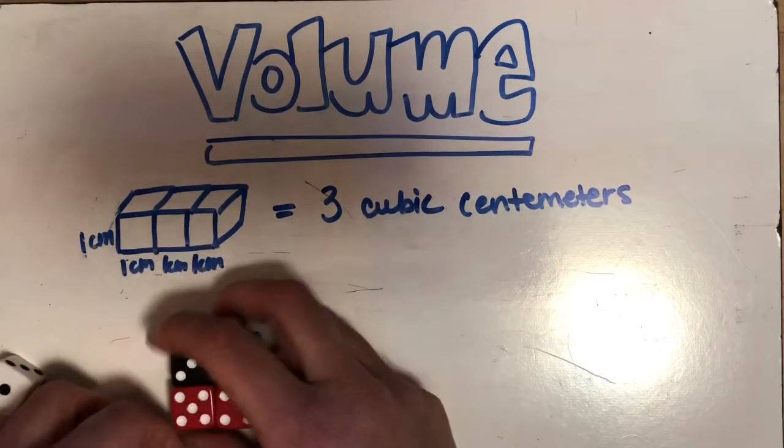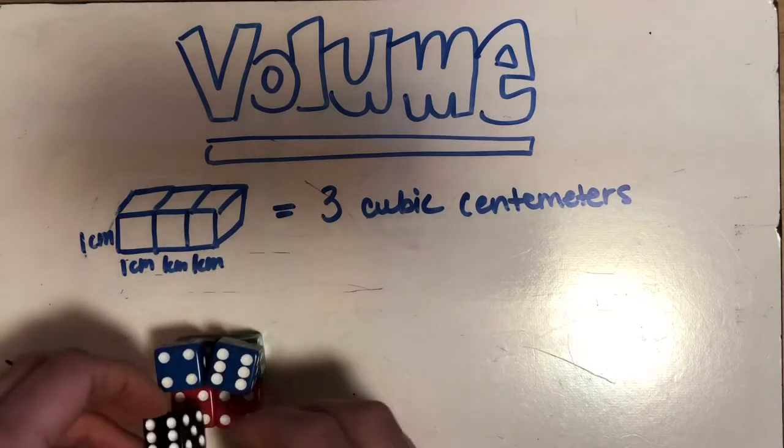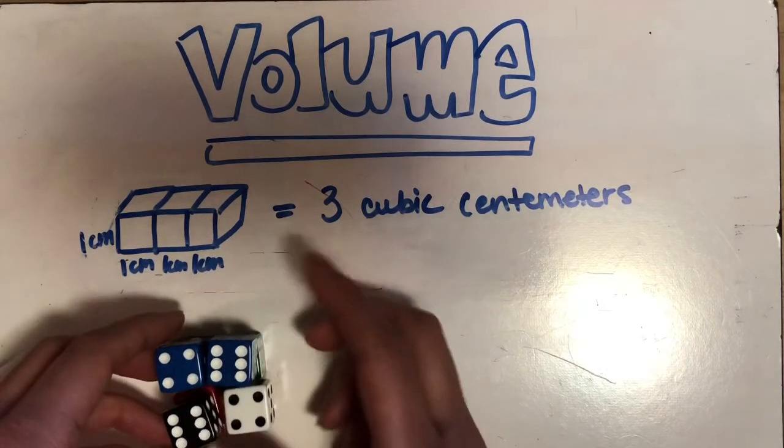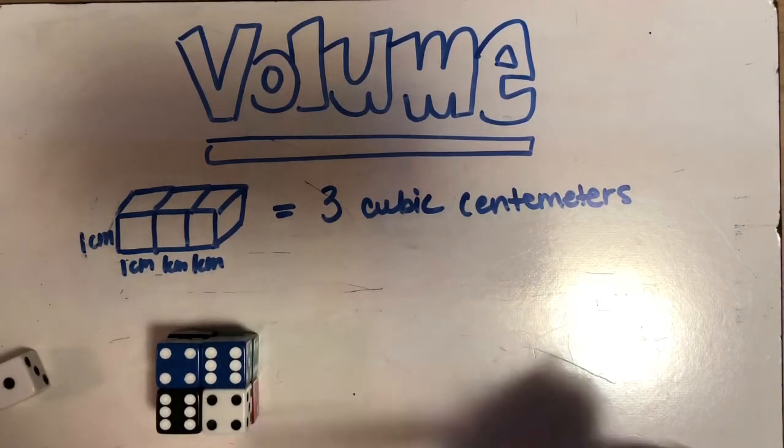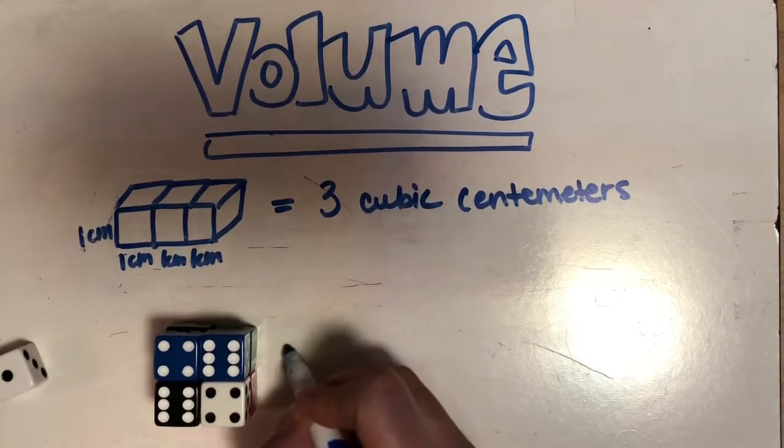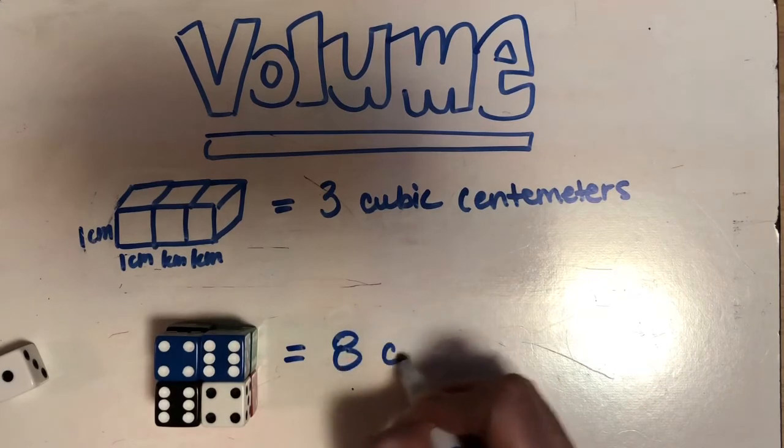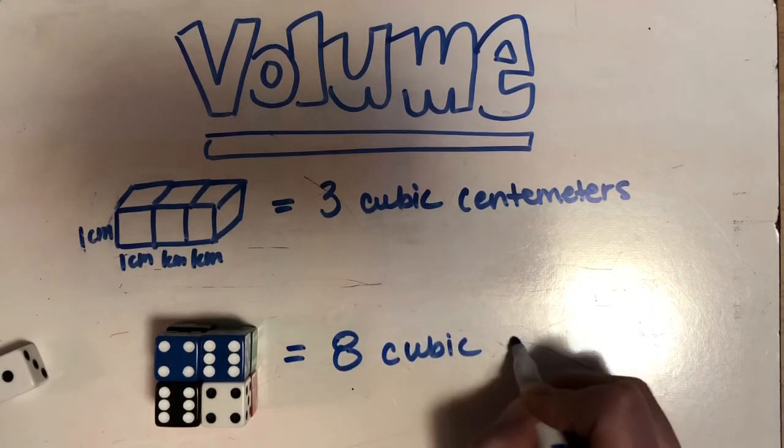Four on the bottom and four on top of that. How many would I have? Well, I have a layer of four on the bottom and I have a layer of four on top. So what's four plus four? This means I would have eight cubic centimeters.